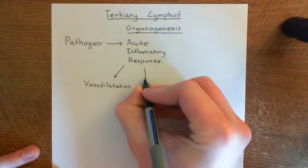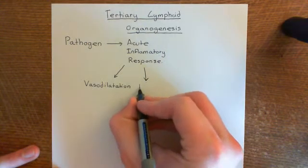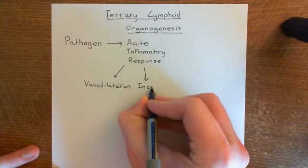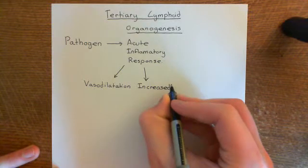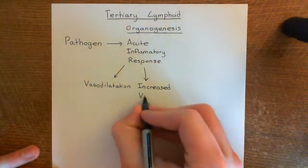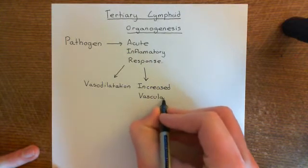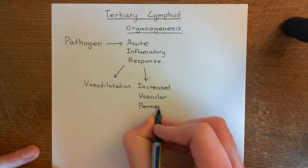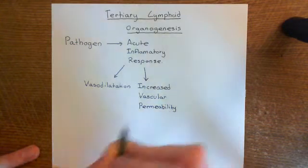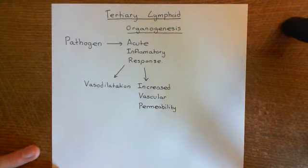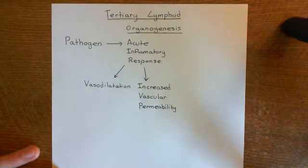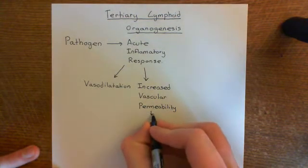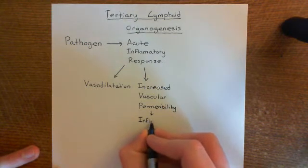Another part of the acute inflammatory response is increased vascular permeability — you open up holes between the endothelial cells in both the capillaries and the post-capillary venules supplying your affected tissue. This means fluid from within the blood can leave and go into the interstitial fluid, so you get swelling at the affected area. This new fluid is what's known as an inflammatory exudate; increased vascular permeability leads to formation of an inflammatory exudate.